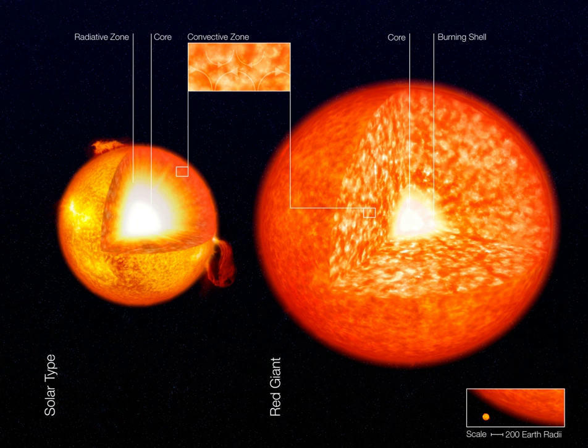Stars more luminous than giants are referred to as supergiants and hypergiants. A hot, luminous main sequence star may also be referred to as a giant, but any main sequence star is properly called a dwarf no matter how large and luminous it is.